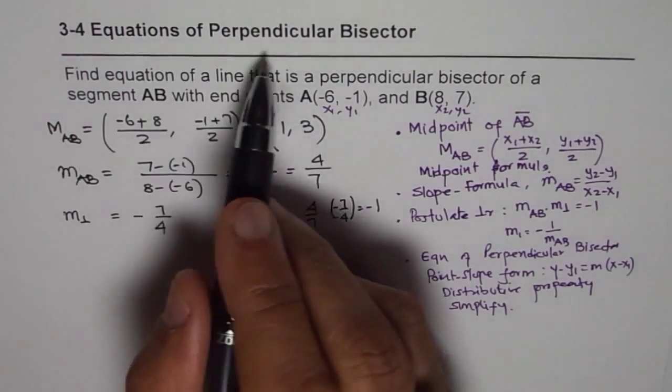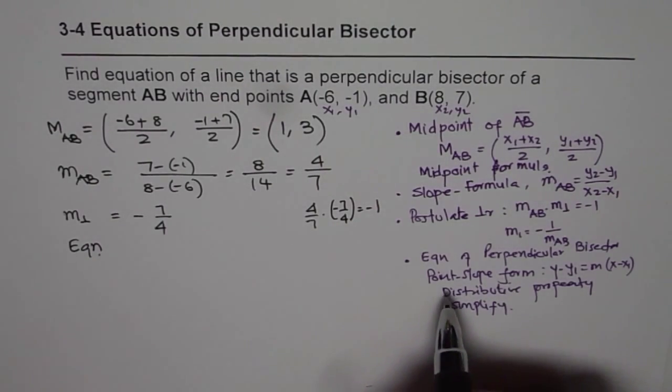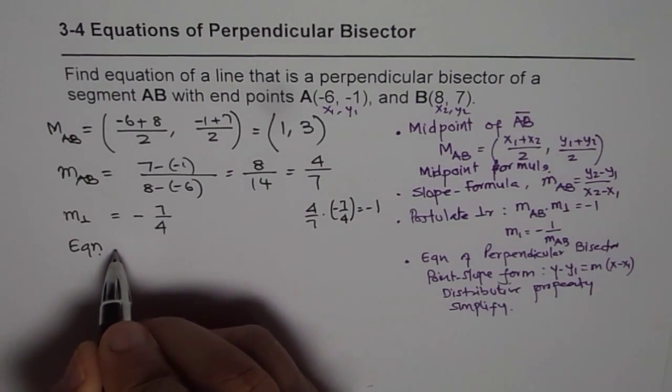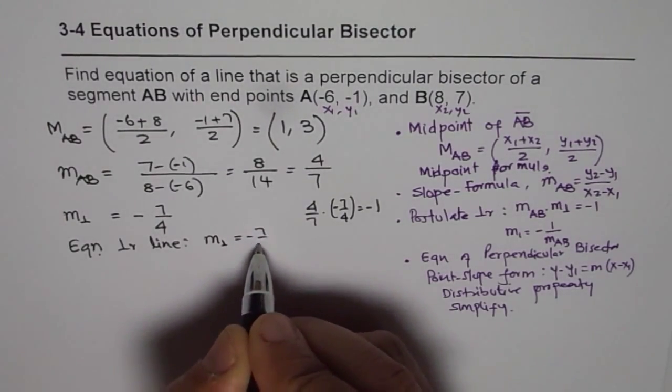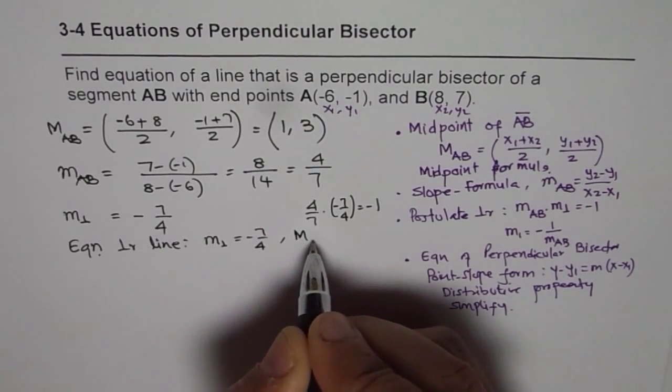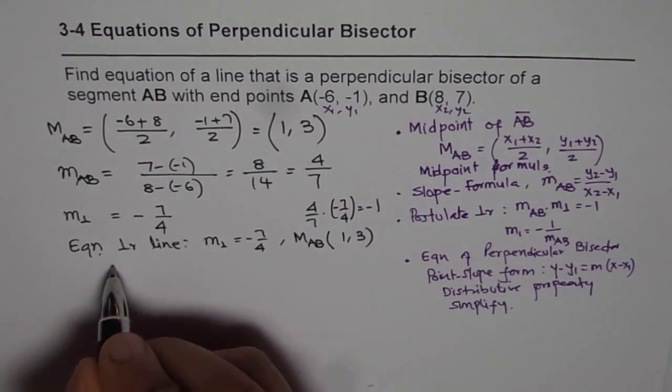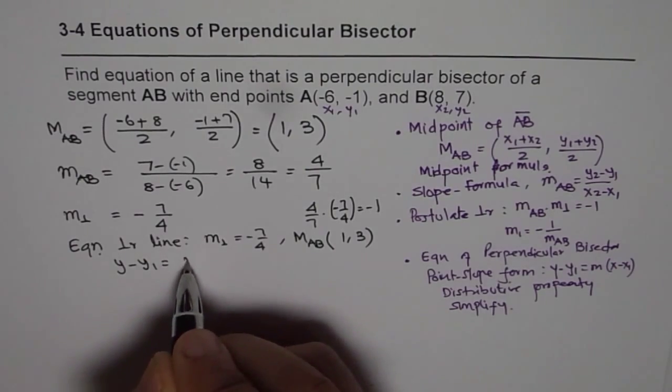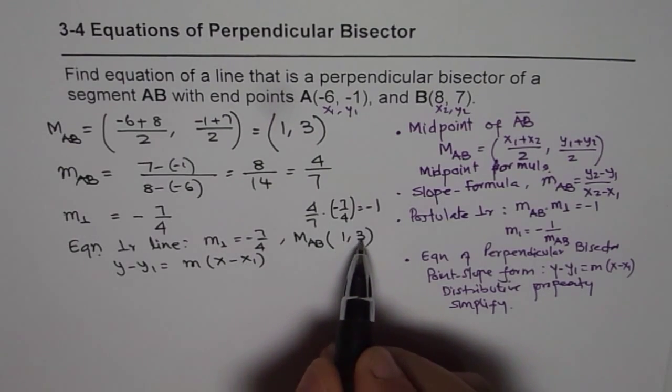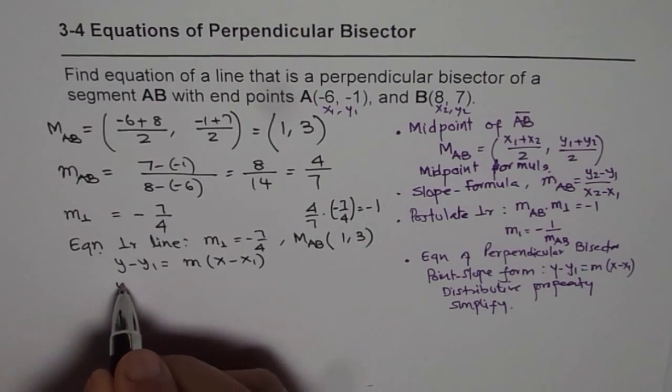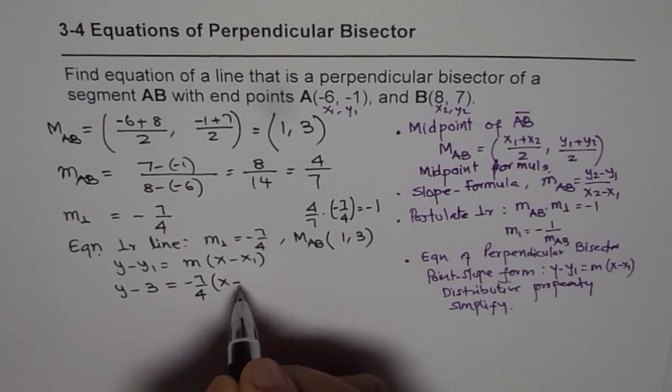Now we need to find equation of a line. So we are finding now equation, and we will find this equation in, we will start with point slope intercept form of perpendicular line, for which we know now, the perpendicular line slope is -7/4, and it goes through the midpoint of segment AB, which is (1, 3). So the formula is y - y1 = m(x - x1). Let us substitute, this is x1, y1. So we have y - 3 = (-7/4)(x - 1).